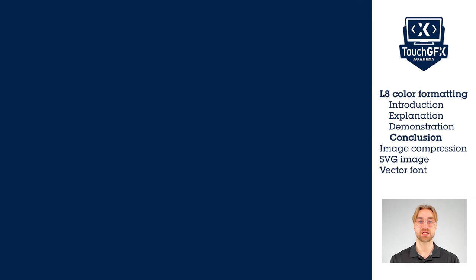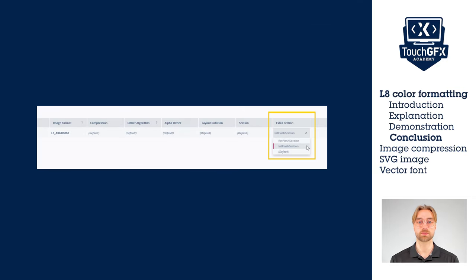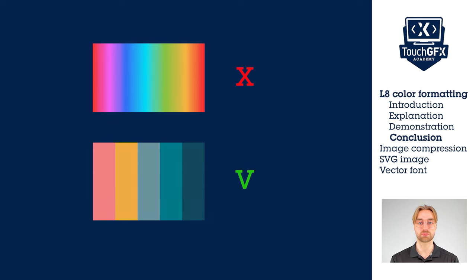Keep in mind that L8 has some restrictions. First, the lookup table must be stored in the internal memory. Also, L8 has a maximum of 256 colors, which makes it not suitable for images with gradients or fades. Now you know when to use L8 and are ready to save over 70% memory on all of your images.